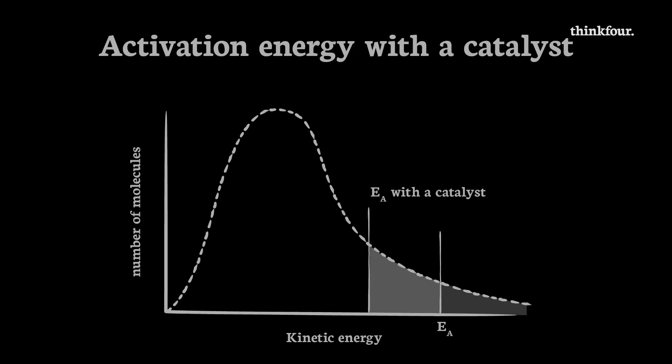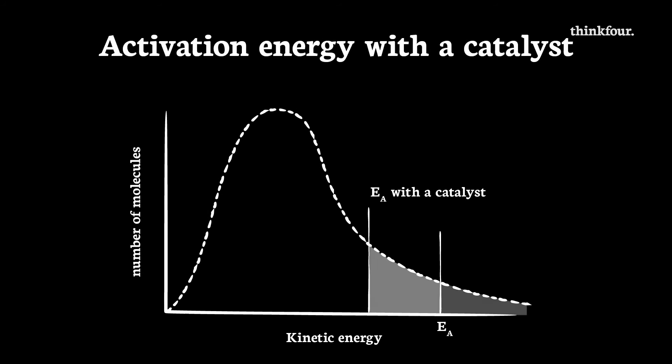Another way to get more molecules past the activation energy is to move the activation energy line. We've seen in episode 12 that a catalyst can reduce the activation energy by using a different pathway for the reaction.